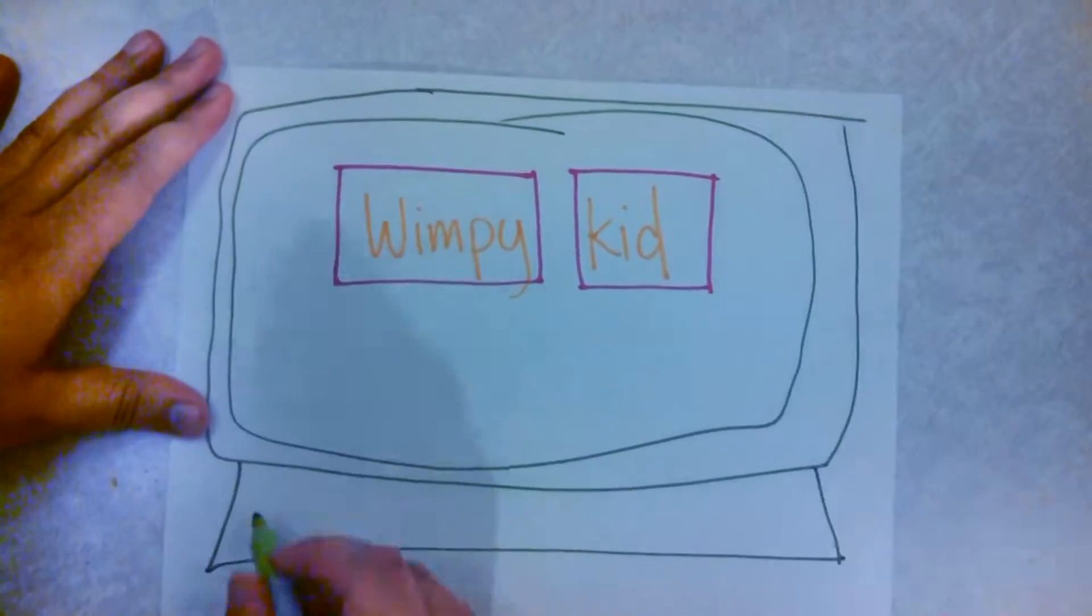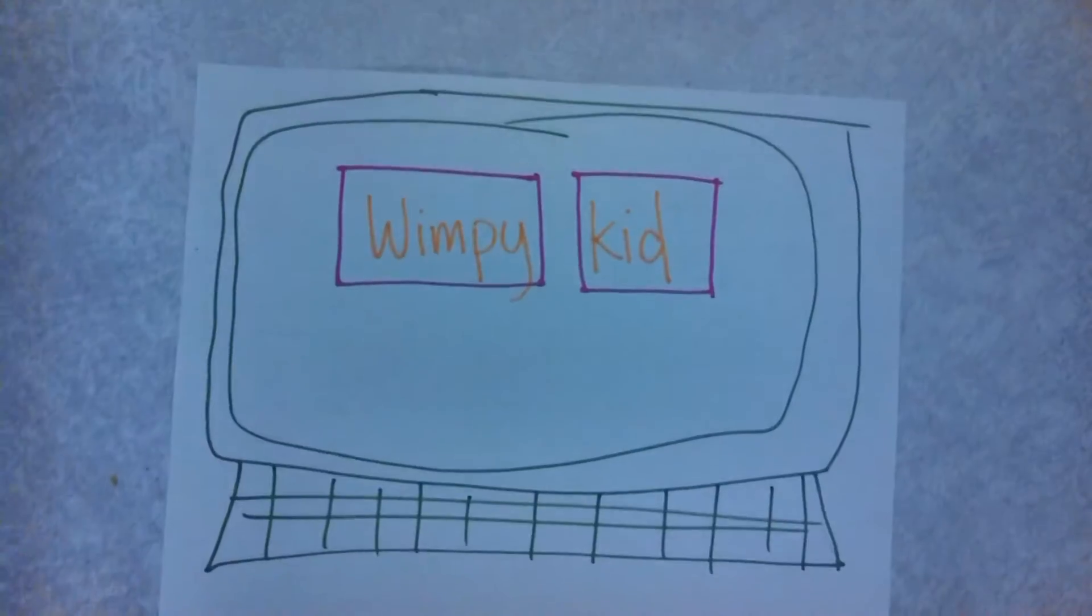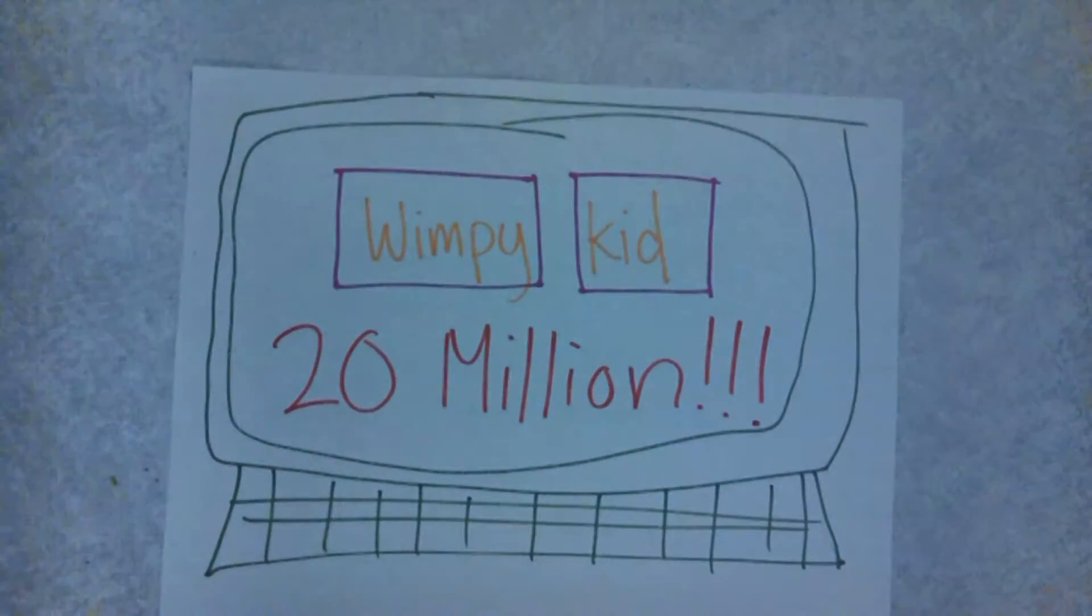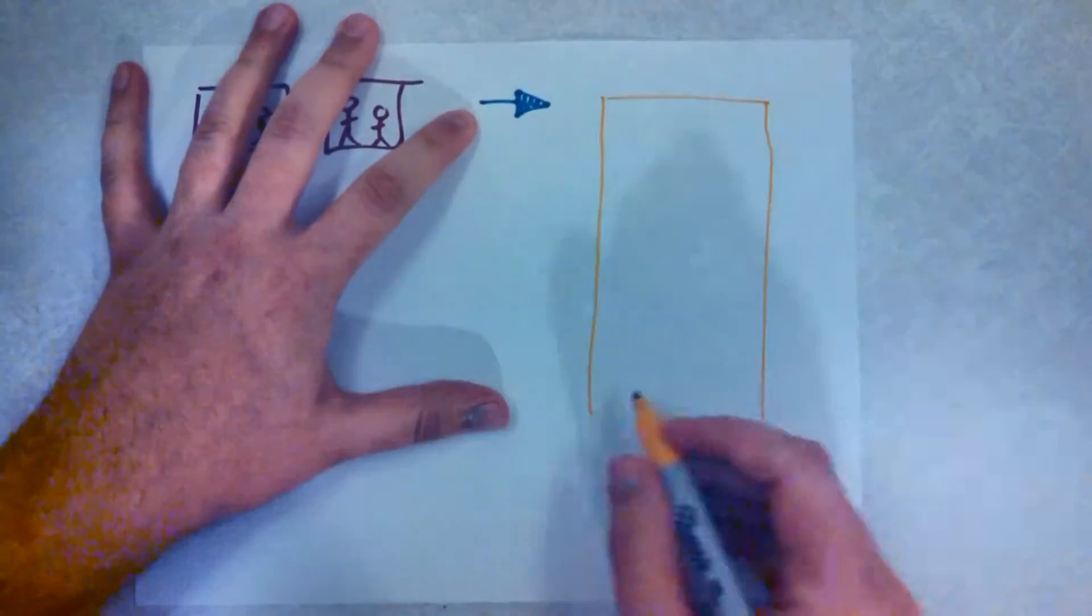An online comic, actually, on a website called Funbrain. Before the author Jeff Kinney ever wrote the first Wimpy Kid book, the comic had already been read over 20 million times.